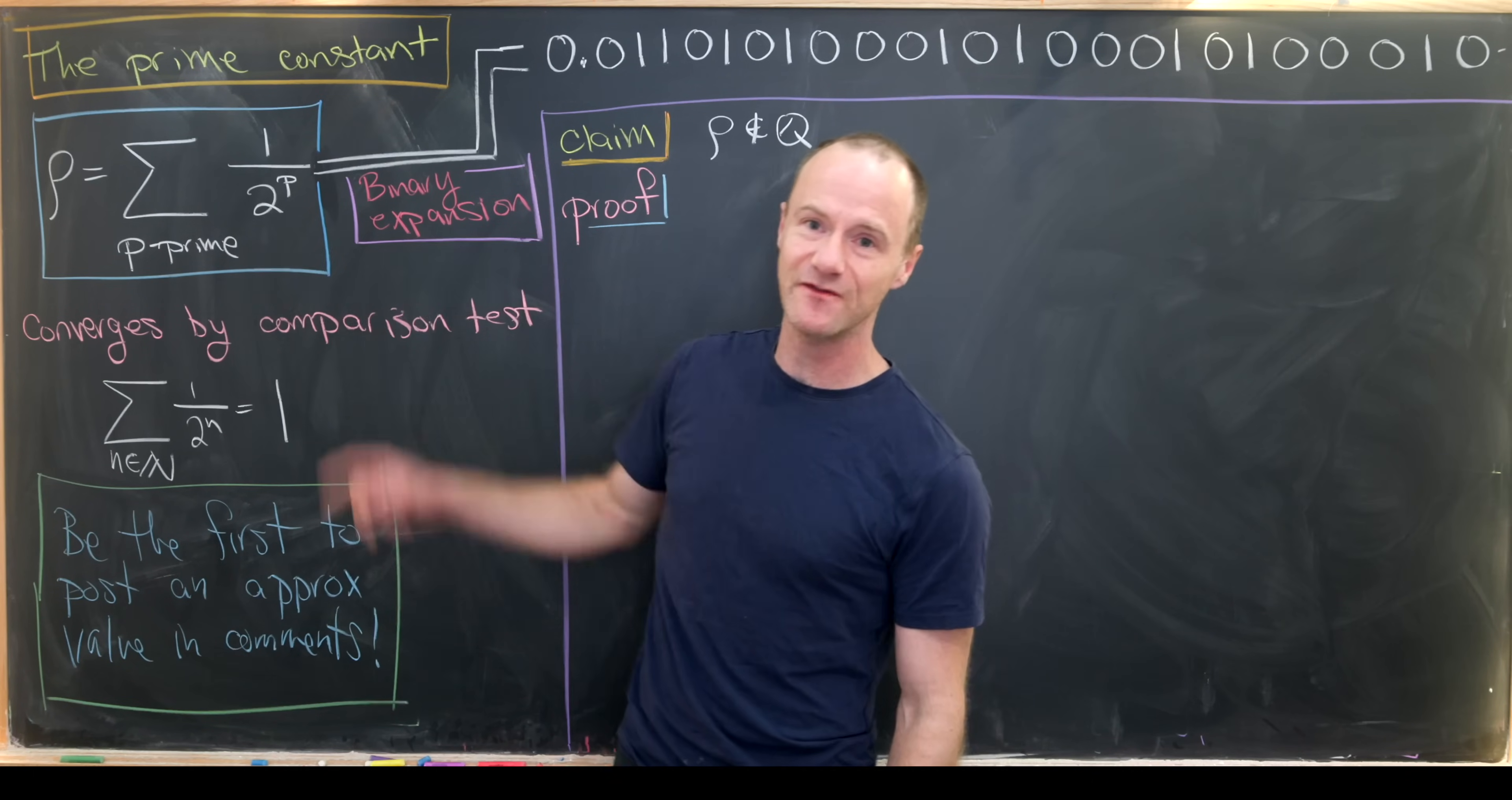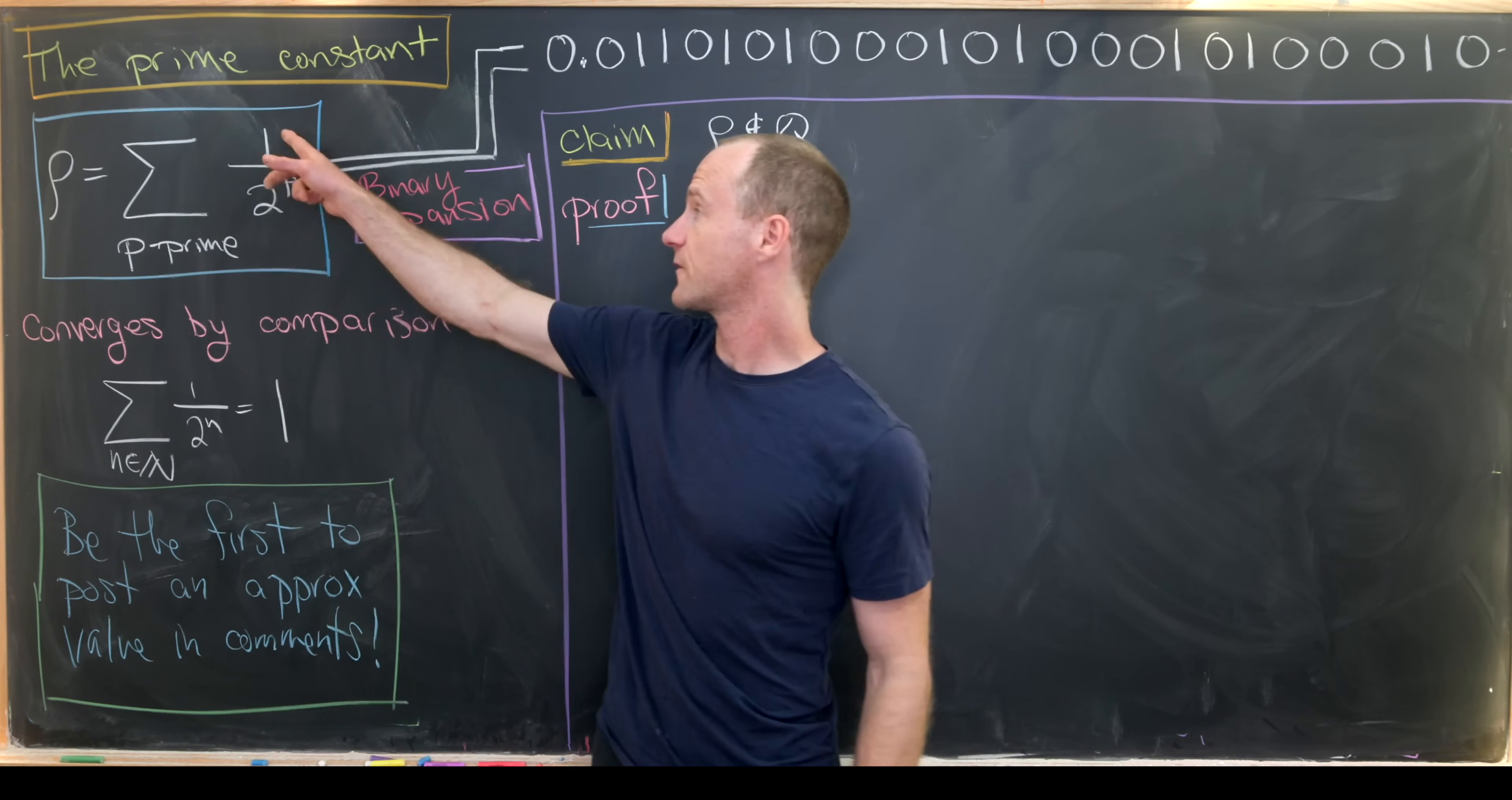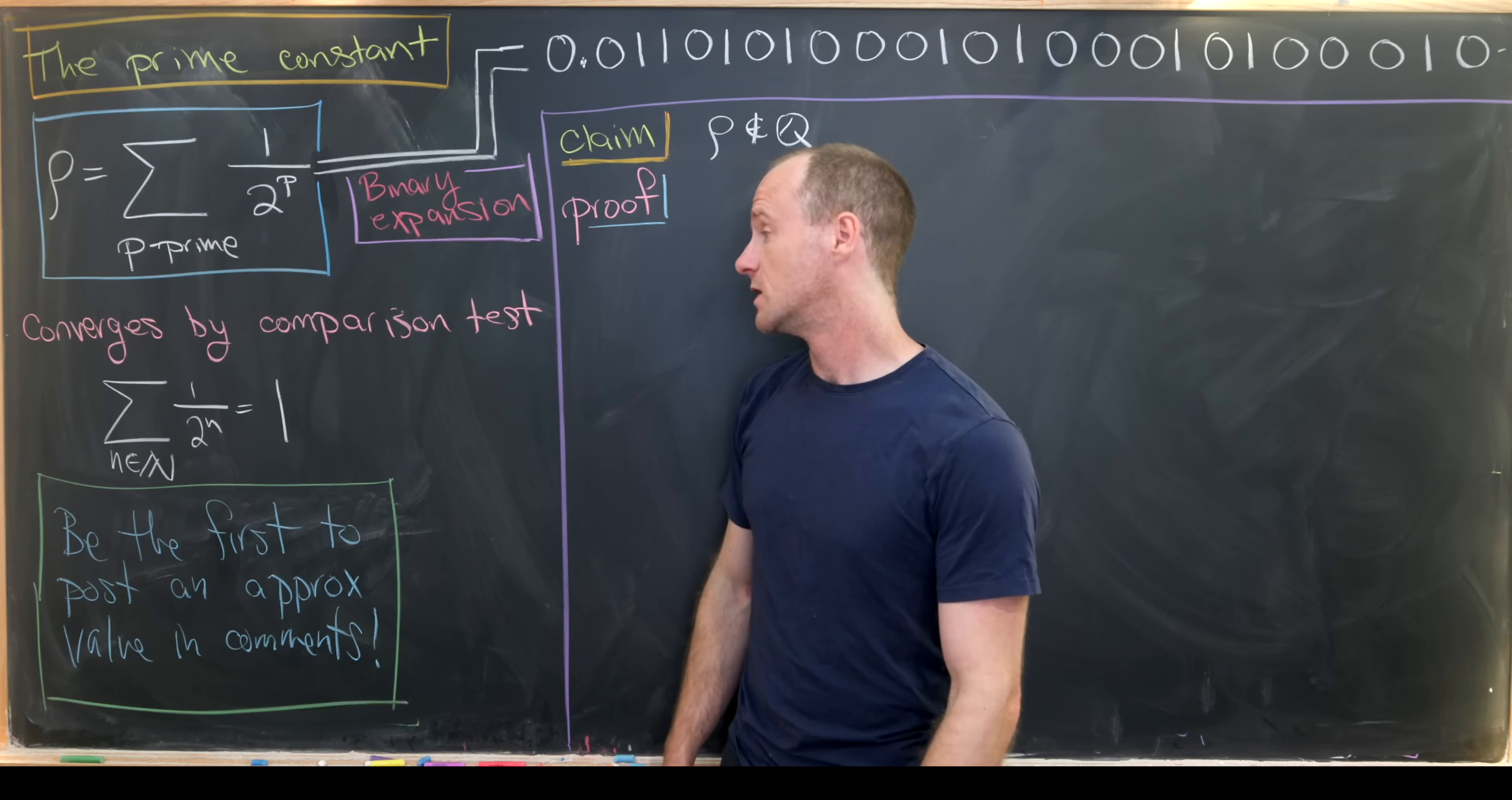And so this infinite sum clearly converges by the comparison test. Notice that each term here is less than or equal to each term here where we're summing over all the natural numbers. Here the first term is 1 over 2. Here the first term is 1 over 4 because the first prime is 2. The second term is going to be 1 over 4, whereas the second term here will be 1 over 8 because the second prime is 3. And so that goes on and on.